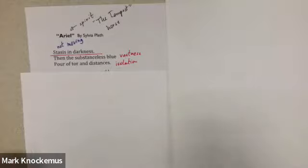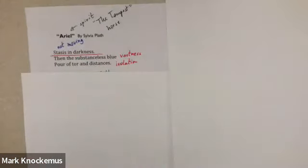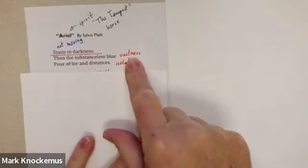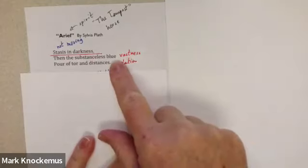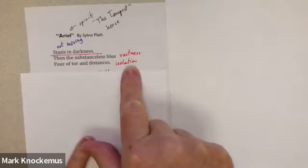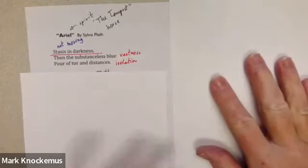Then suddenly, bang. What a shift. I drew a line in red because that's such a difference as we move from one to the other. Then the substanceless blue pour of tor and distances. So now all of a sudden we encounter vastness, we have color. Tor is a mountain. But there's nothing else here. We have this idea of being isolated.